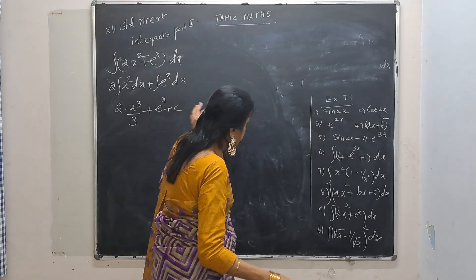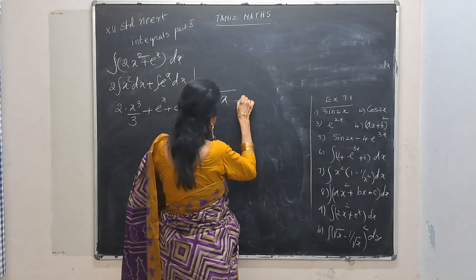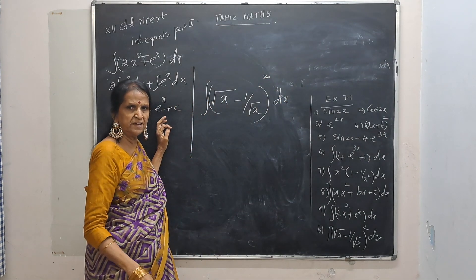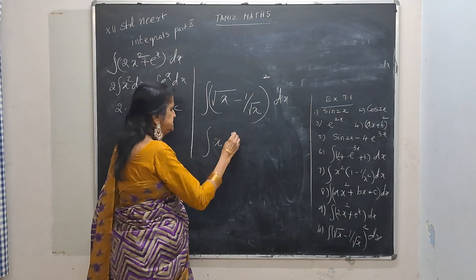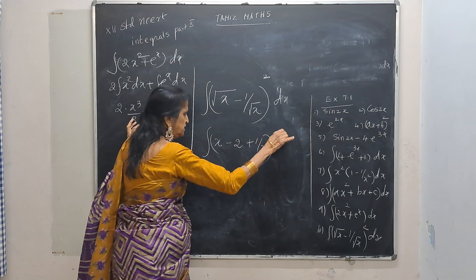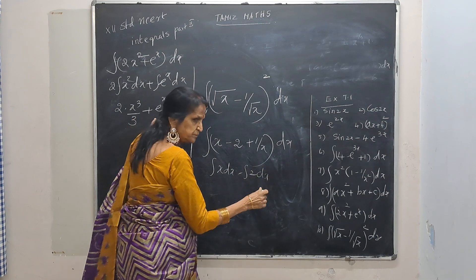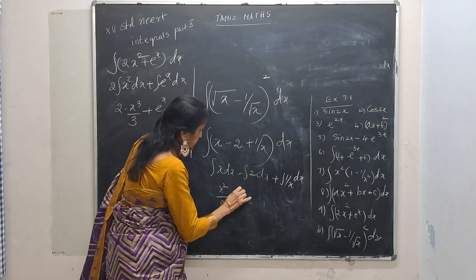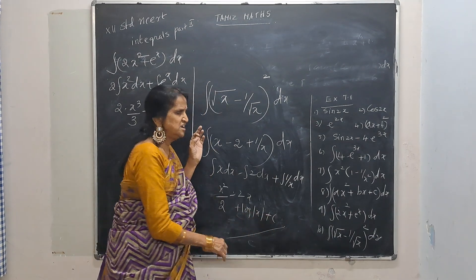The last question for the day: integrate (root x minus 1 by root x) whole squared. Using the identity (a minus b) squared equals a squared minus 2ab plus b squared: square of root x is x, minus 2 times root x times 1 by root x — this and this cancel giving minus 2, plus b squared which is 1 by x. So we integrate x minus 2 plus 1 by x dx. Integral of x is x squared by 2, minus 2x, plus log of mod x, plus c.